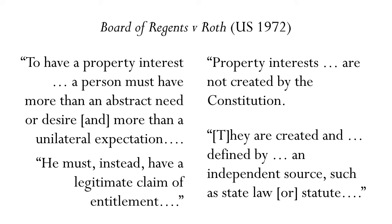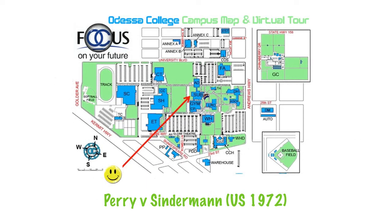In a companion case, Perry v. Sinderman, the Court tells us what kind of facts could survive summary judgment. The facts of Perry are very similar to those of Roth — the teacher was not renewed for the following academic year. This teacher, however, had been rehired several years running. There was language in the faculty handbook that a jury might consider as a basis for a property interest.